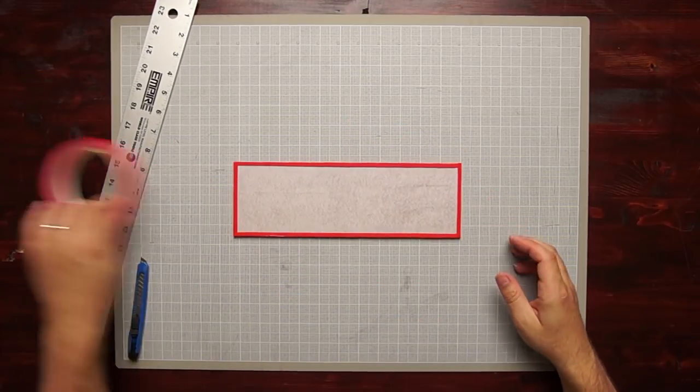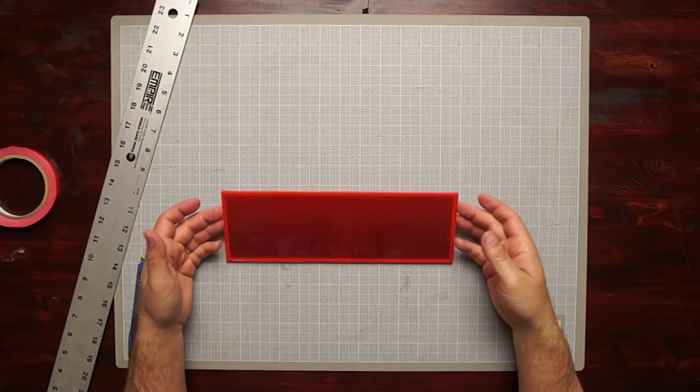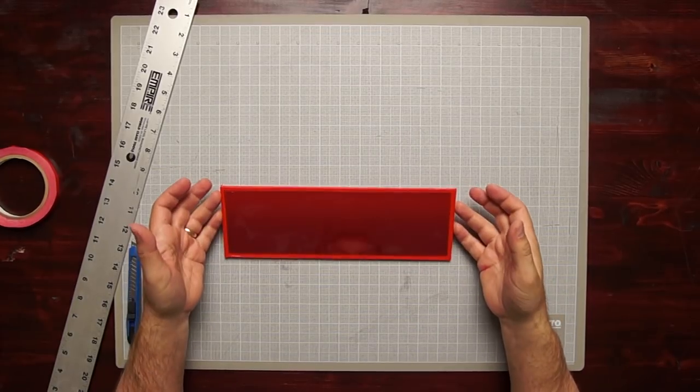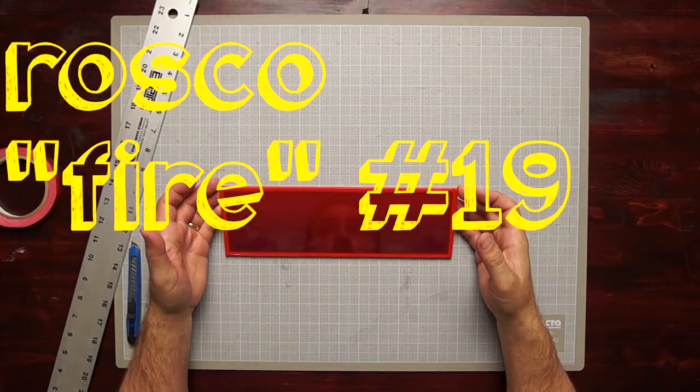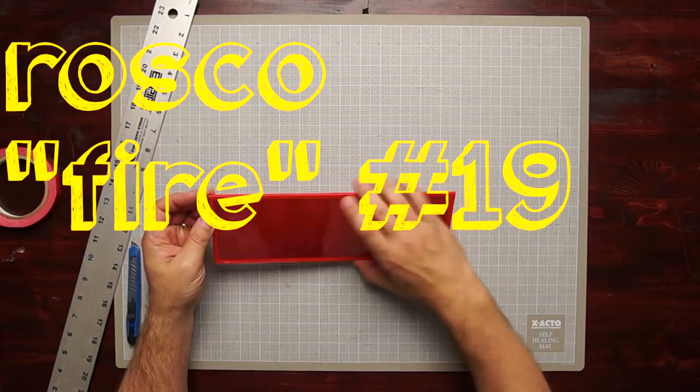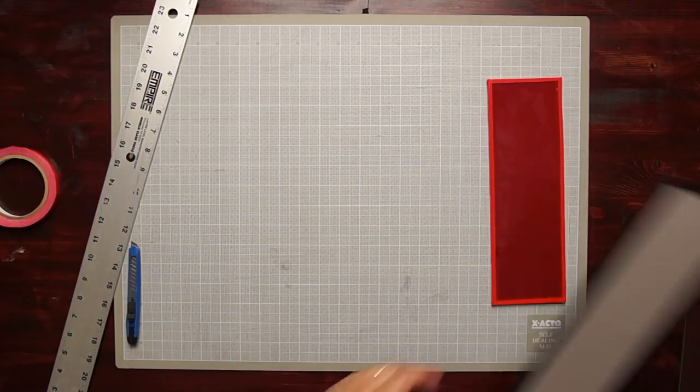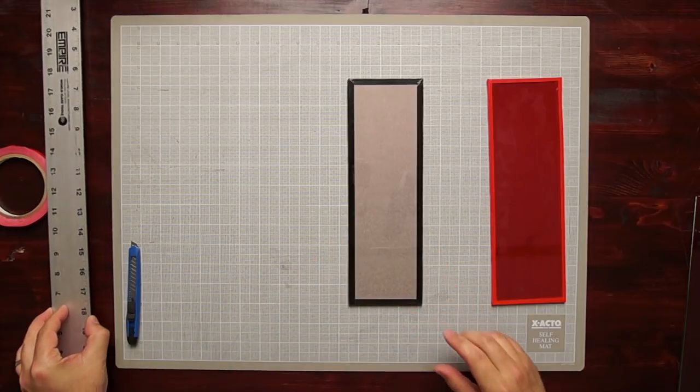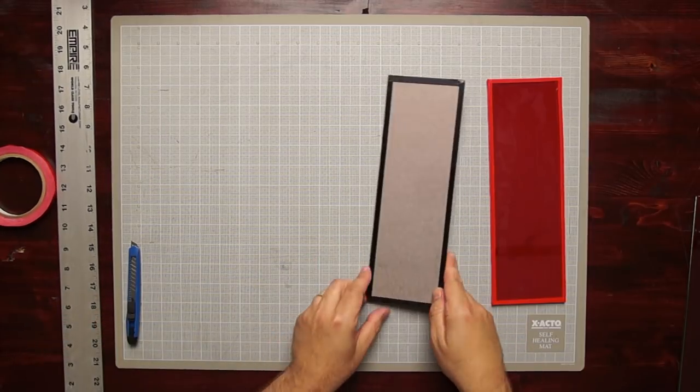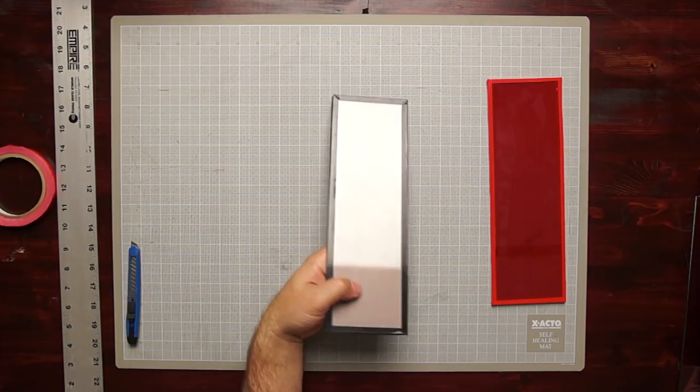All right, there we have a red filter. The red filter is two sheets of Fire 19 and one piece of white vellum. The black tape is two sheets of vellum, one on either side.